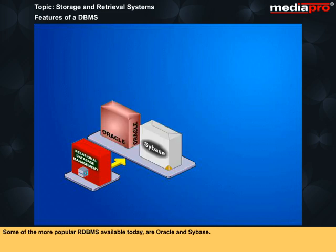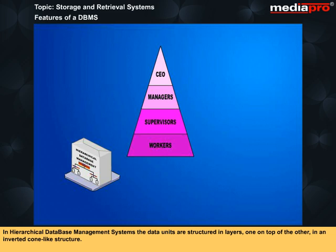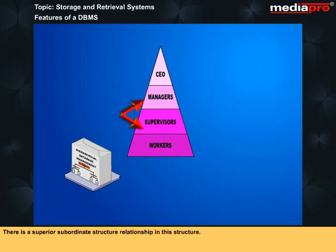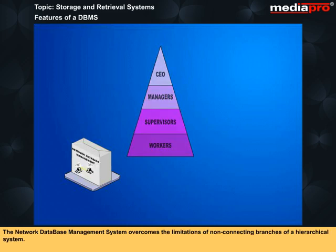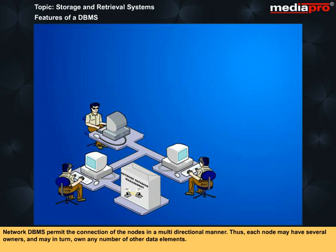RDBMSs employ relatively new data storage and retrieval concepts, are more flexible and more powerful than file management programs. Some of the more popular RDBMS available today are Oracle and Sybase. In hierarchical database management systems, the data units are structured in layers, one on top of the other in an inverted cone-like structure. The single root data component is at the tip of the cone at the top, and has a wider base for the branching subordinate elements below. The individual elements are not connected, and each has one single superior above it. The network database management system overcomes the limitations of non-connecting branches of a hierarchical system. Network DBMS permit the connection of the nodes in a multidirectional manner, so each node may have several owners and may, in turn, own any number of other data elements.